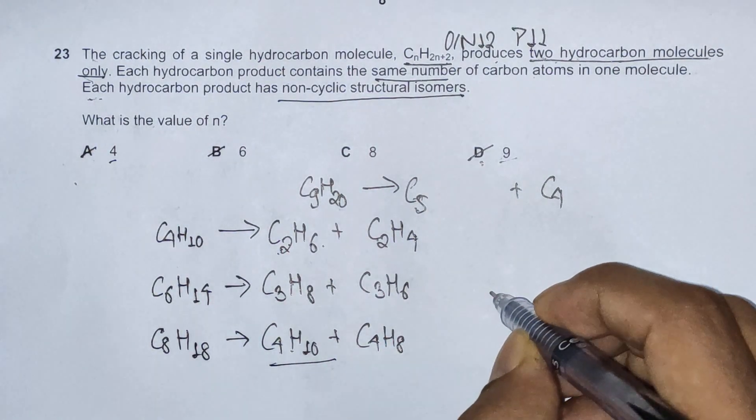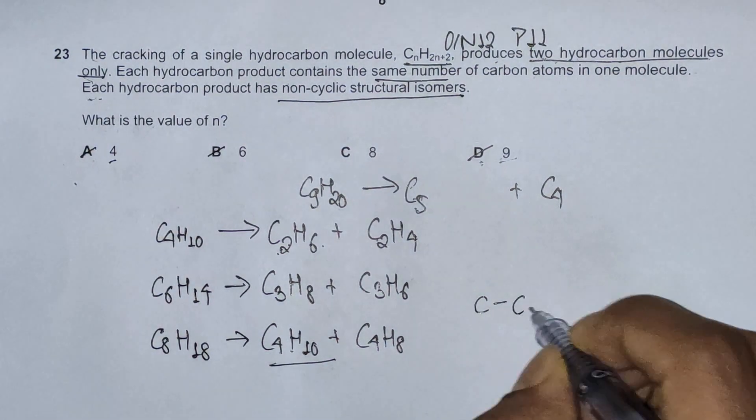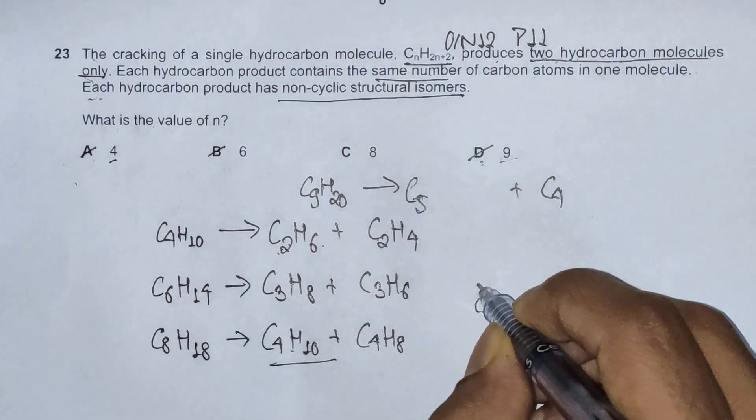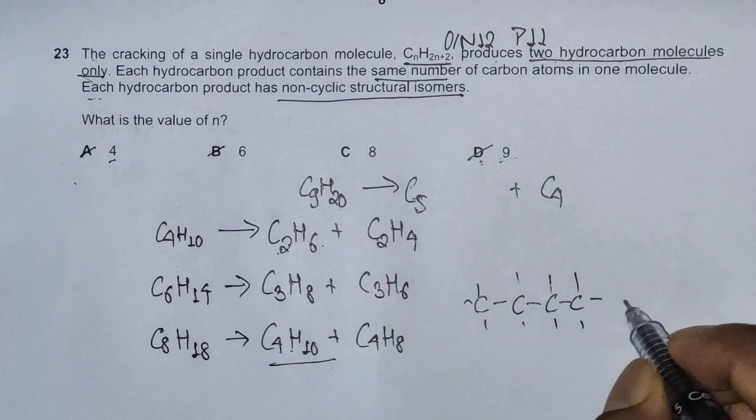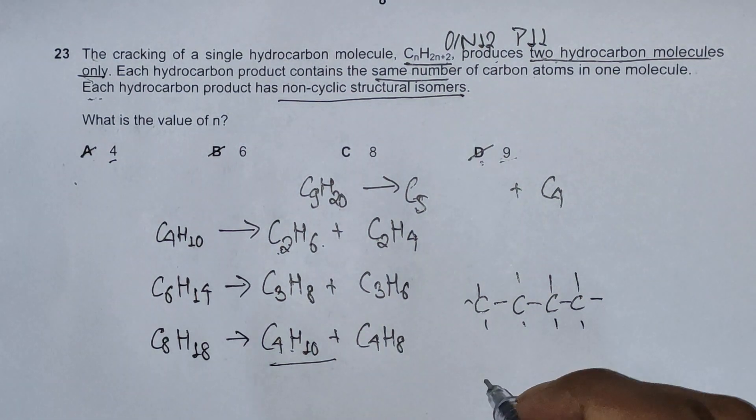If we check for butane first, we'll have its normal structure is 4 carbon atoms surrounded by hydrogens. And can we construct structural isomers out of it? Yes, we can obviously.